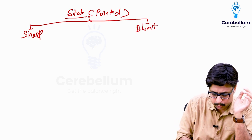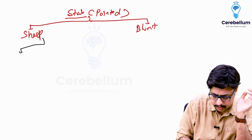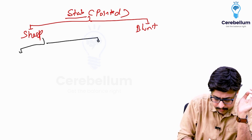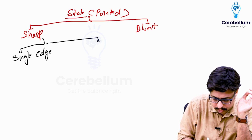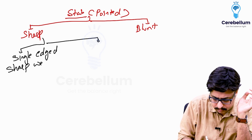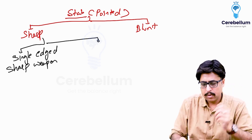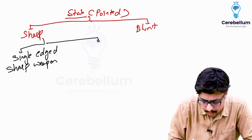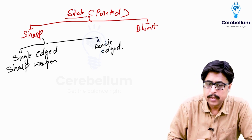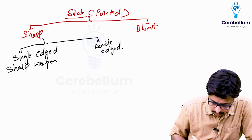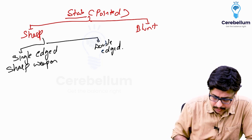When it comes to sharp objects, there are two different scenarios to be considered: whether it is a single-edged sharp weapon like a single-edged knife, or a double-edged weapon. These are the two scenarios.